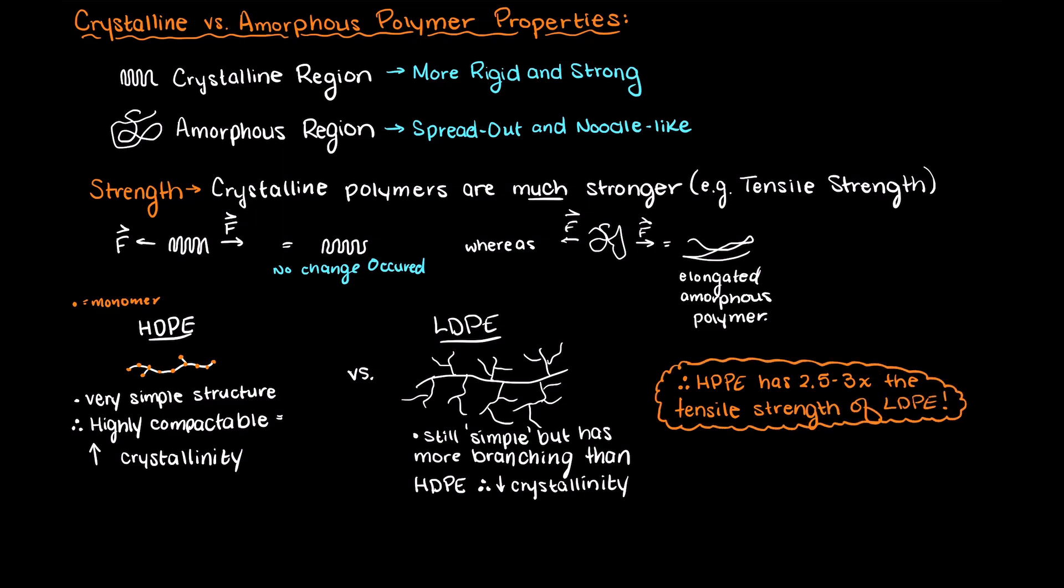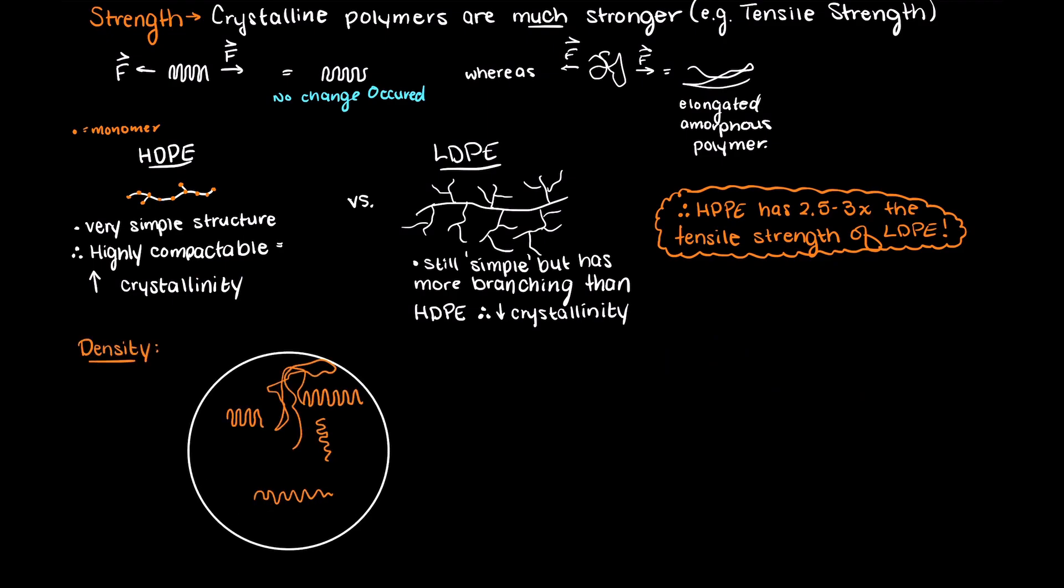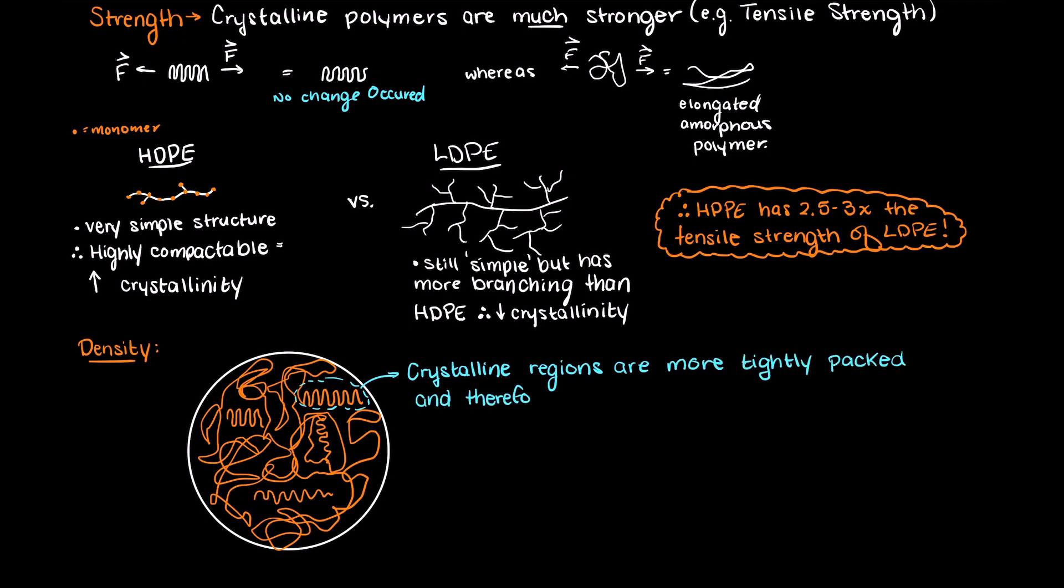In terms of density, crystalline polymers are higher, which should make sense as the polymers themselves can compress themselves better and are more tightly packaged than amorphous polymers.